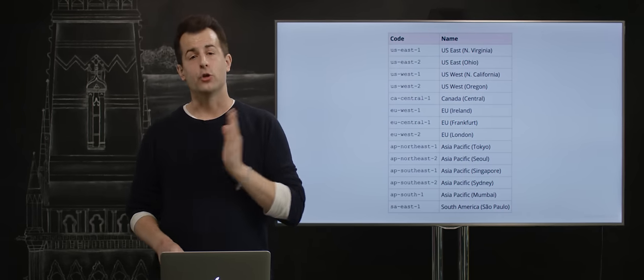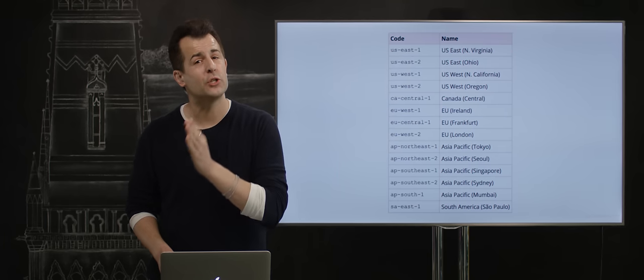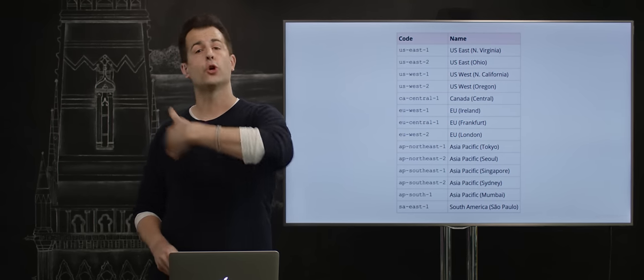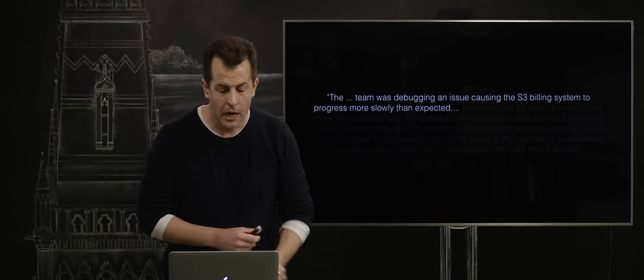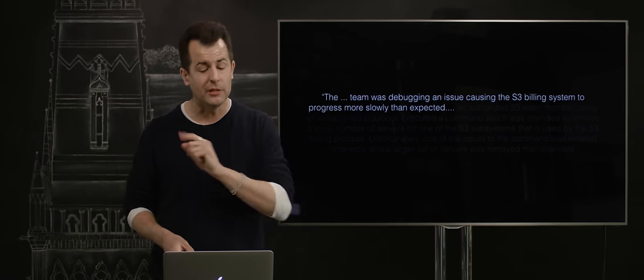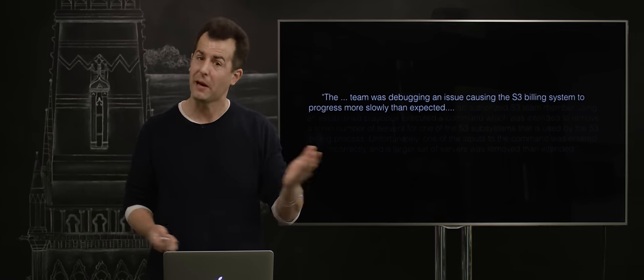Now, Amazon explains that the reason S3 became inaccessible, and in turn, so many of these customers, CS50 among them, went offline, was as follows. The team was debugging an issue causing the S3 billing system to progress more slowly than expected.